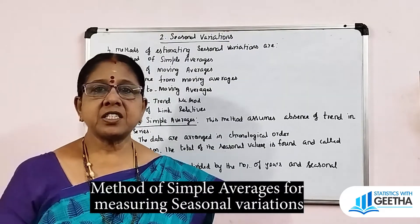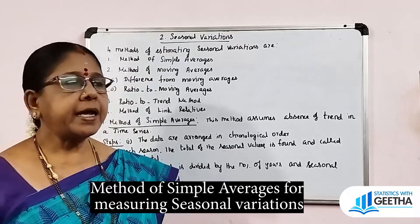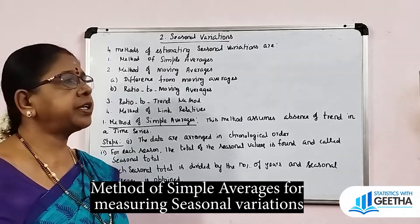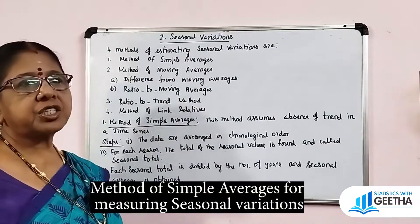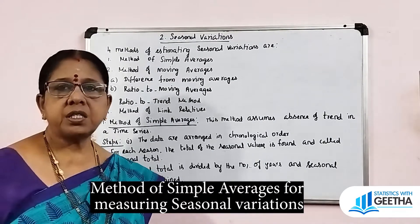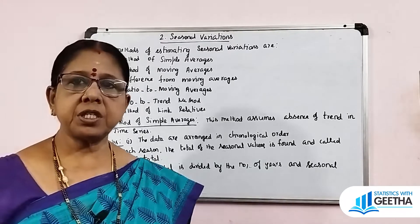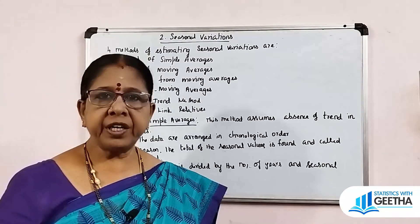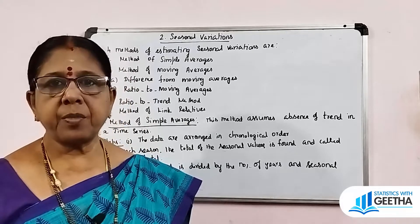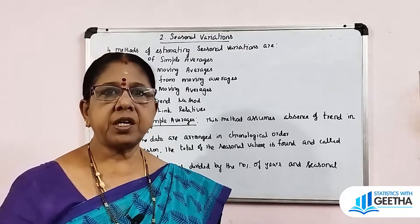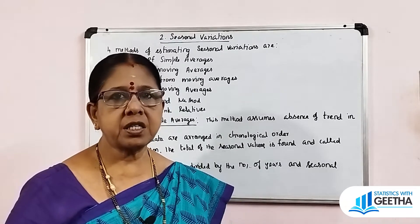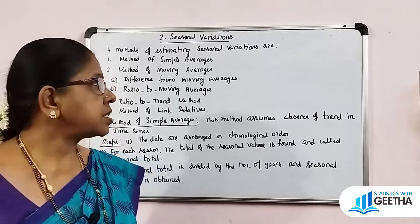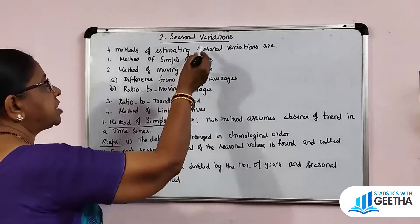Hello, welcome to my channel, Statistics with Geetha. Today we are going to see the next component of time series — that is seasonal variations. Seasonal variations are changes in time series data values that occur due to seasons. For example, in the rainy season one pattern occurs, in winter another pattern. Demand, supply, and prices all change — increasing or decreasing. These regular periodic changes are called seasonal variations.